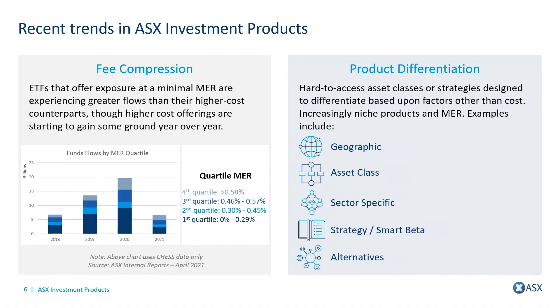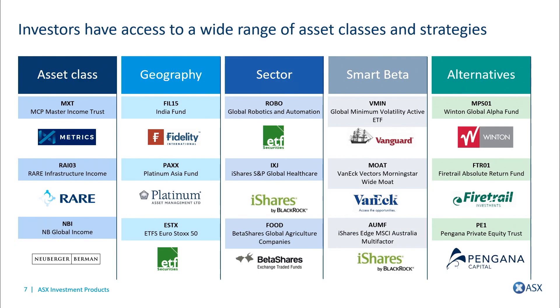The other really interesting trend has been around product differentiation. Rather than bringing low-cost product to market, fund managers are now starting to differentiate their products. For example, in terms of asset class structures, listed investment trust structures such as MXT or Metrics Credit have enabled investors to access private credit.